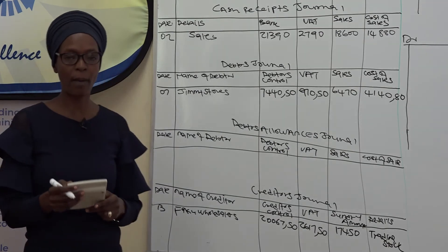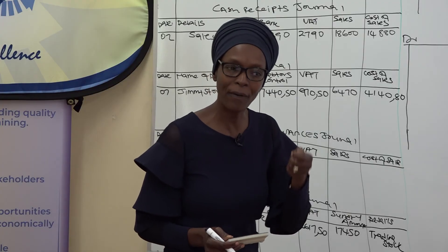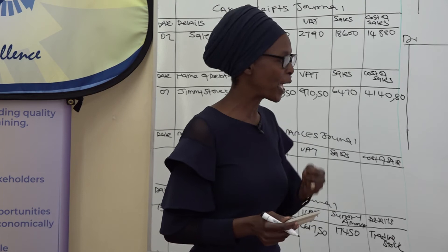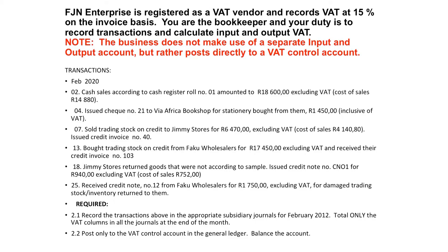On the 18th, Jimmy Stores returned goods that were not according to sample — a credit note was issued. These are sales returns. We sold goods on credit to Jimmy, so as Jimmy is our customer returning goods to the business, it must be entered in the debtors allowances journal. Let's check whether the amount is inclusive or exclusive: credit note number A for R940 excluding VAT.